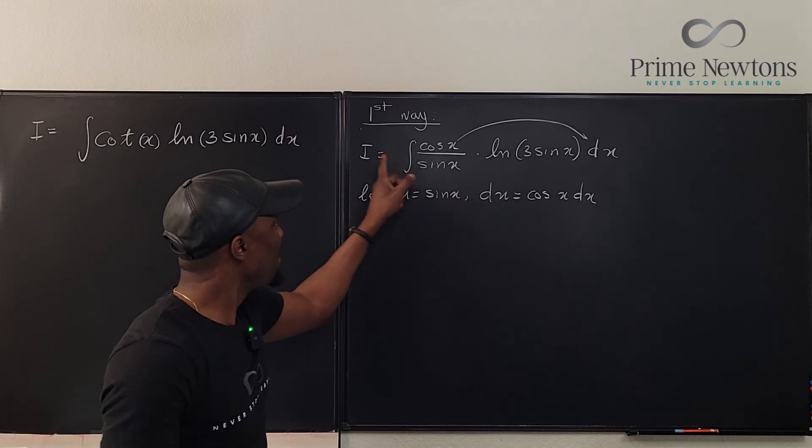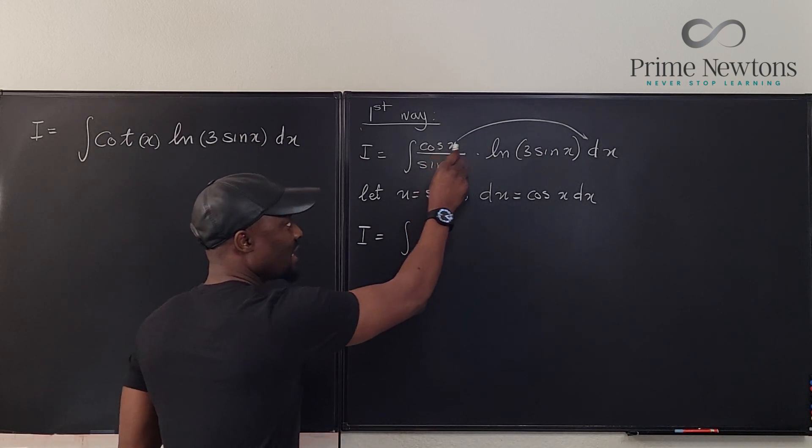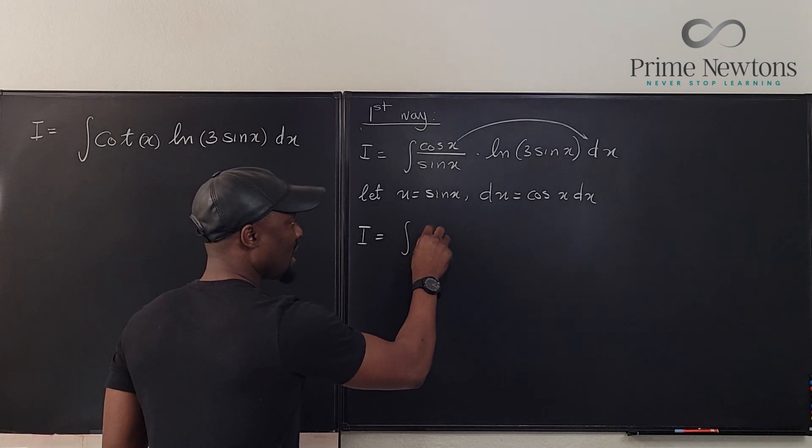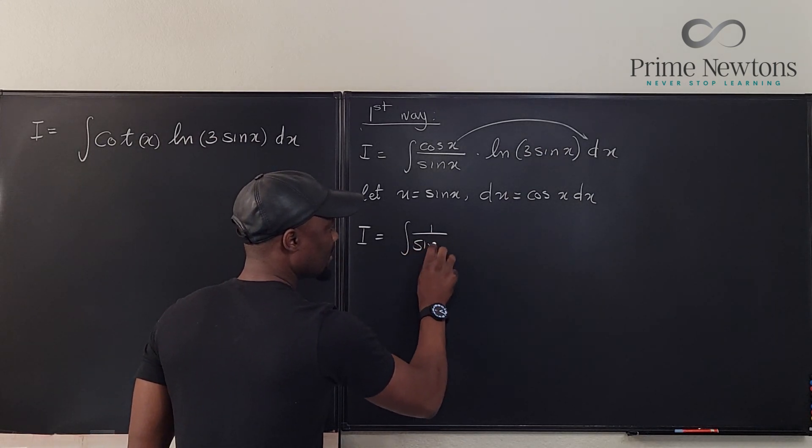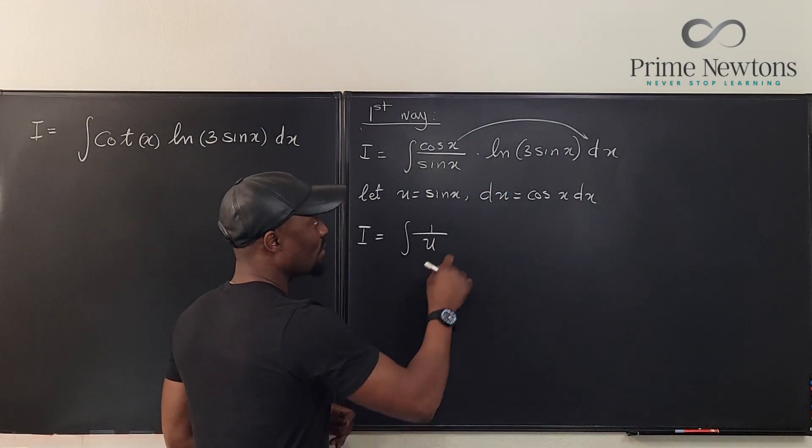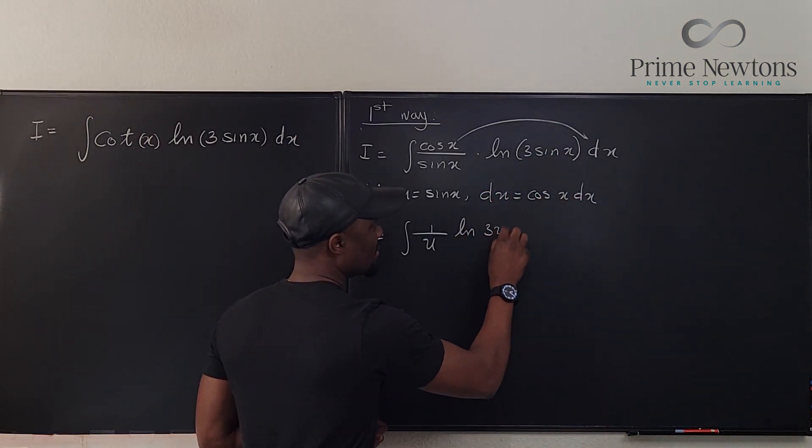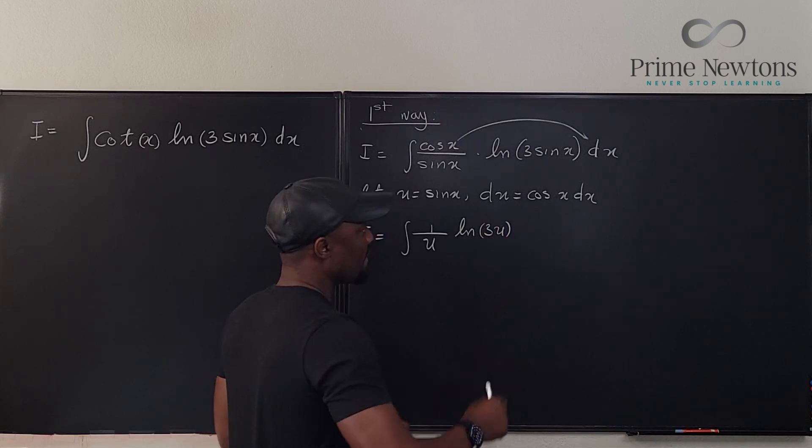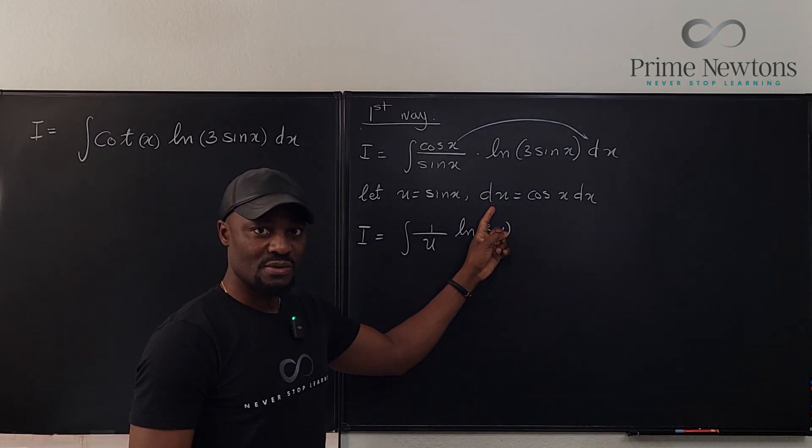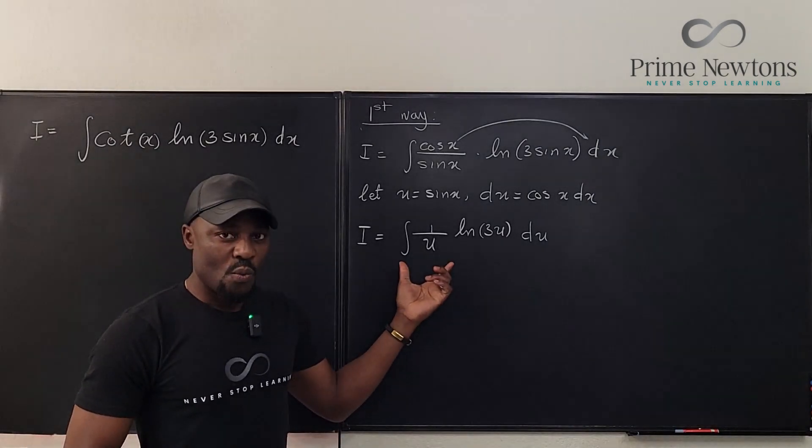This integral can now be written as the integral of—cosine x dx is gone—what we have here is now just 1 over sine x, but sine x is just u, so 1 over u multiplied by the natural log of 3u. Cosine x dx is replaced with du.